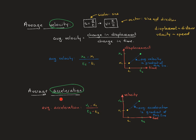Acceleration is a word you should be familiar with — when you accelerate in a car you change speed. Acceleration is your change in velocity divided by your change in time. If you have a graph of velocity versus time, the average acceleration is the slope of the line between two points on it. The formula for average acceleration is (V₂ − V₁) / (T₂ − T₁).